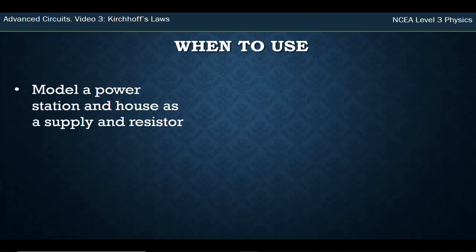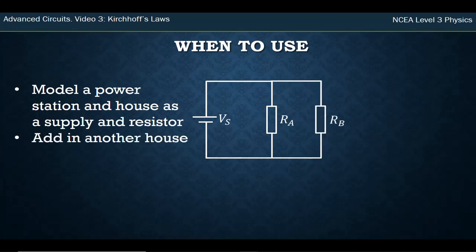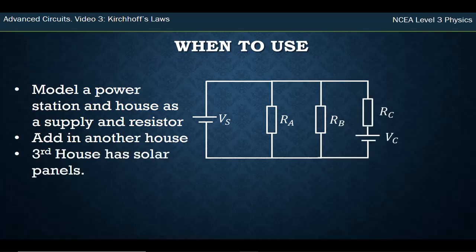However, let's say that I asked you to model a power station and a house. The power station is a voltage supply and we'll model the house as a resistor. It's a simple circuit, but in real life there's more than one house connected to a power station. So if you put a second house as a second resistor and then add a third house as well.